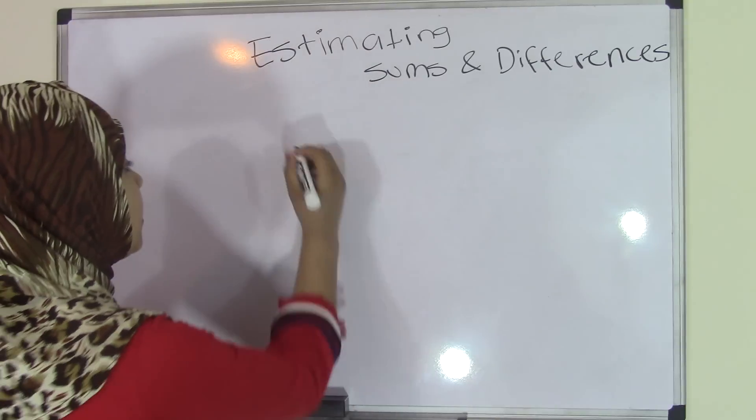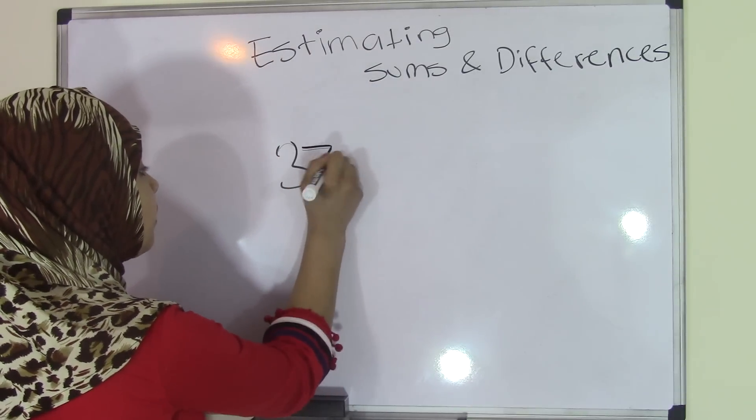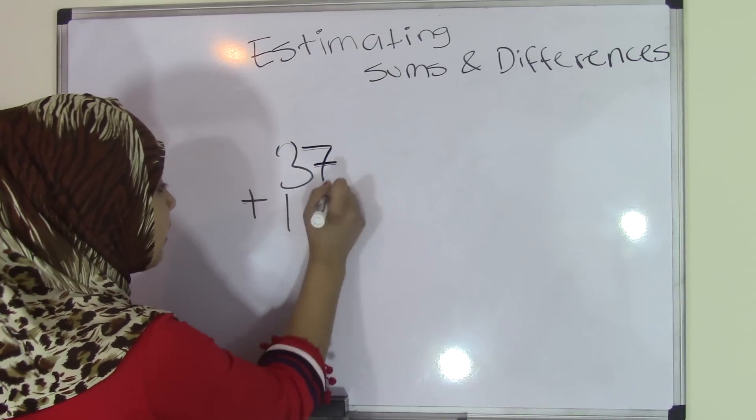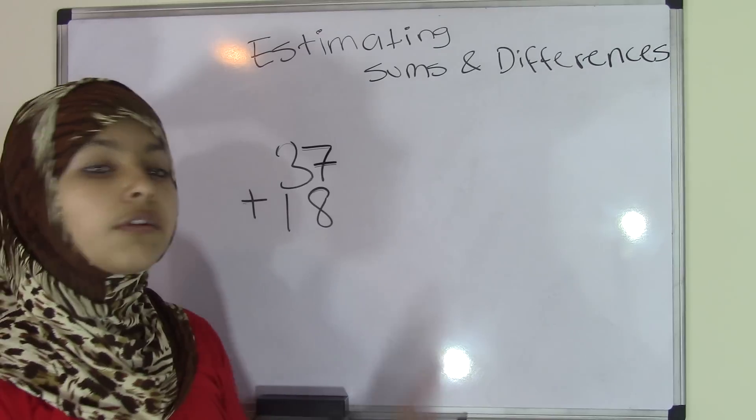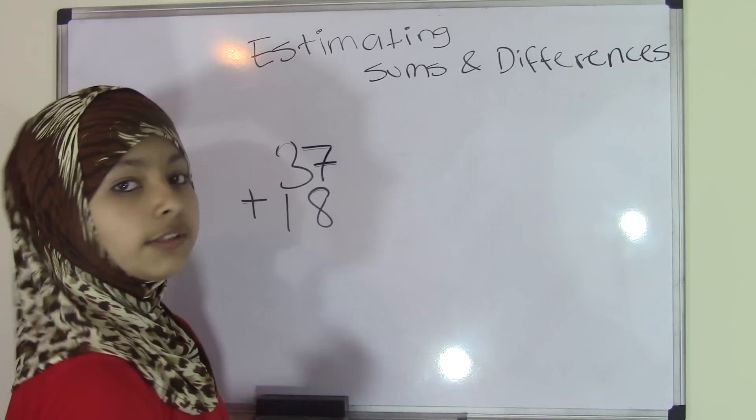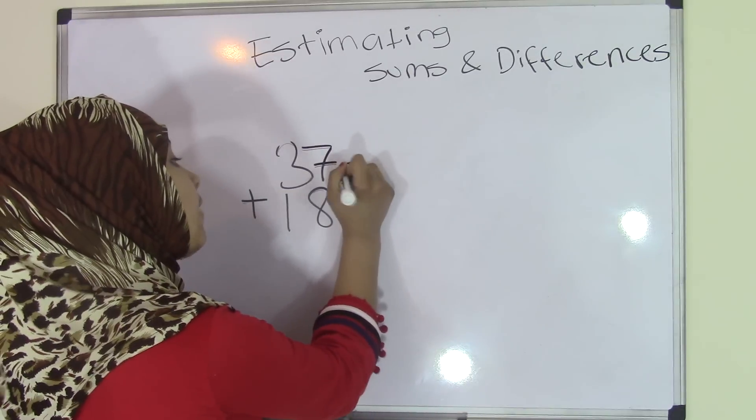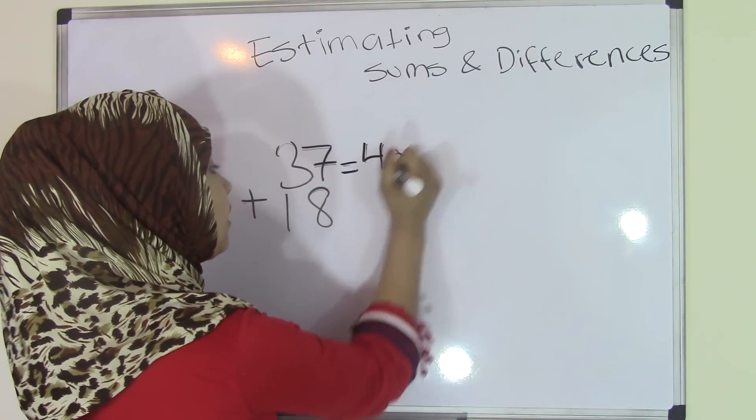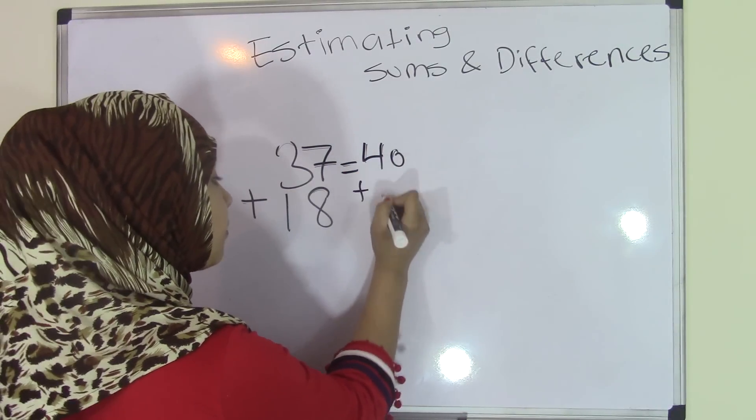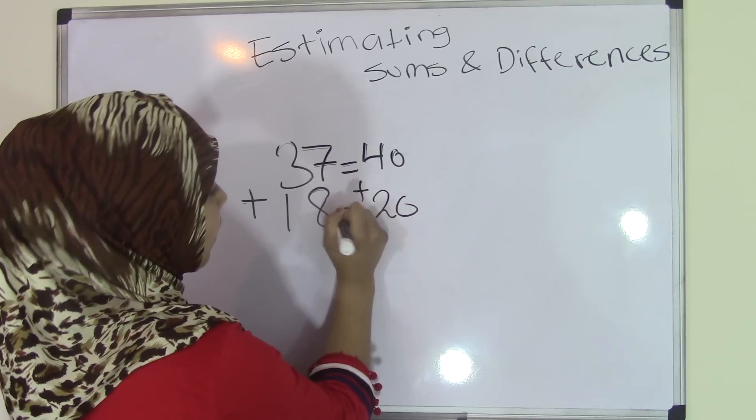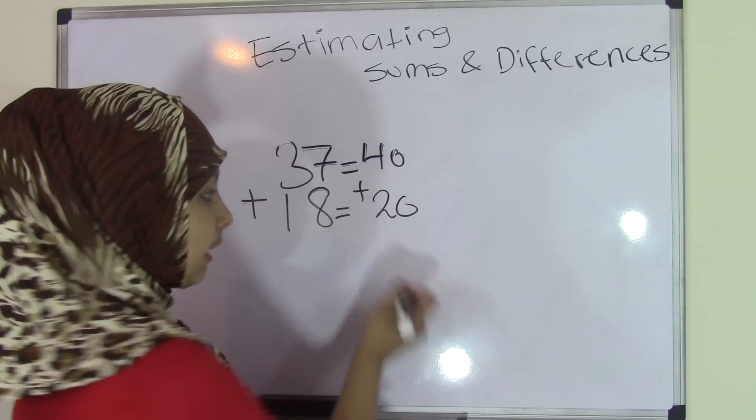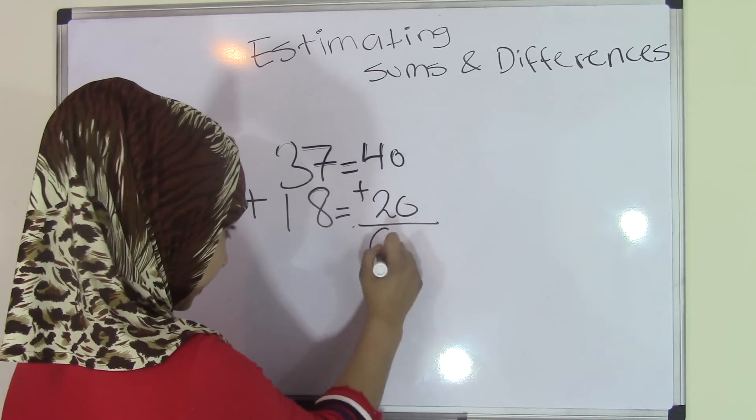So if we have 37 plus 18, you will round 37 and 18 to the nearest tens place. So 37 will become 40 and 18 would become 20. Now, 40 plus 20 equals 60.